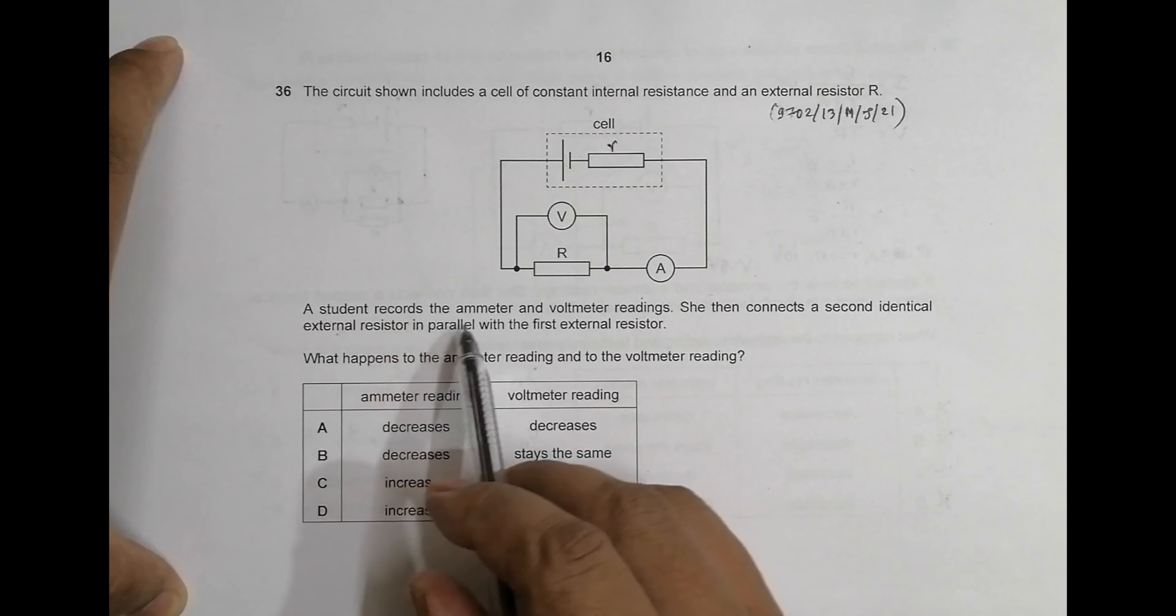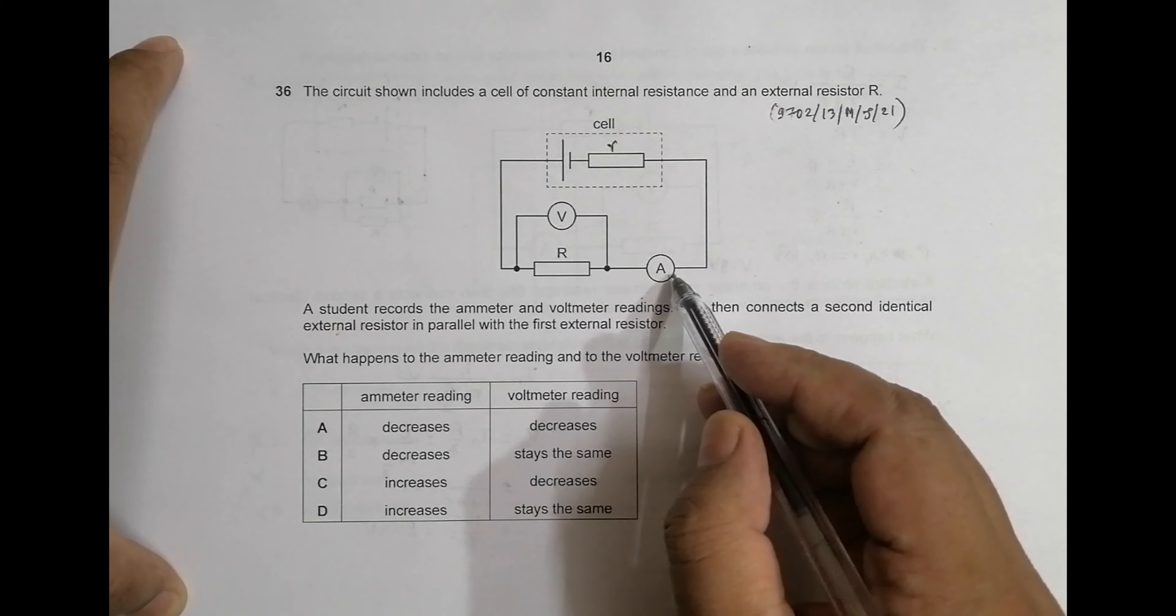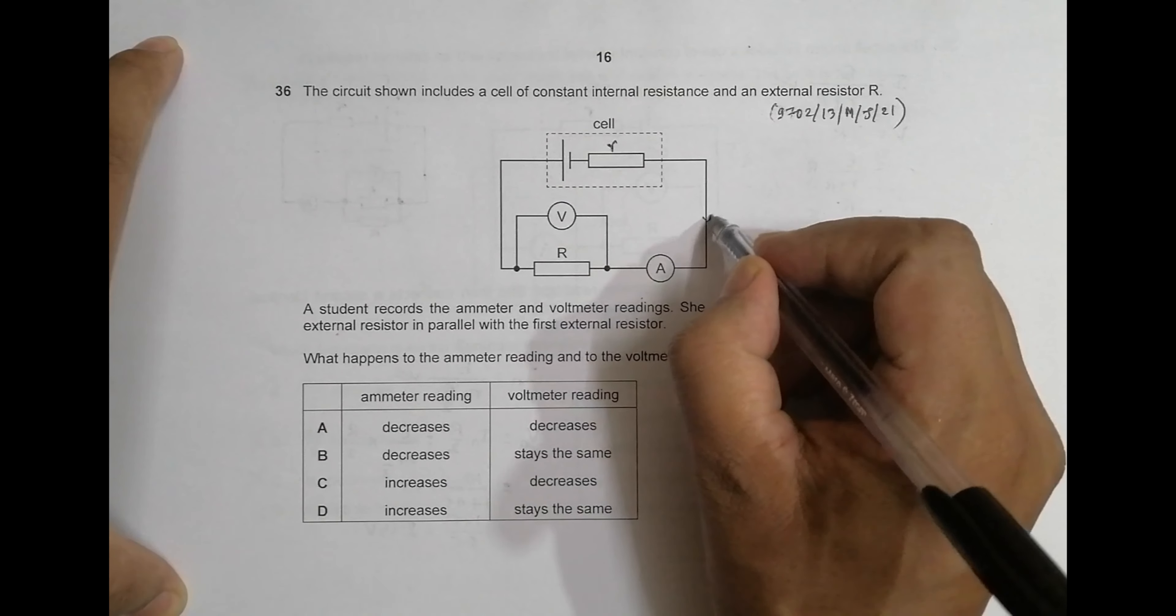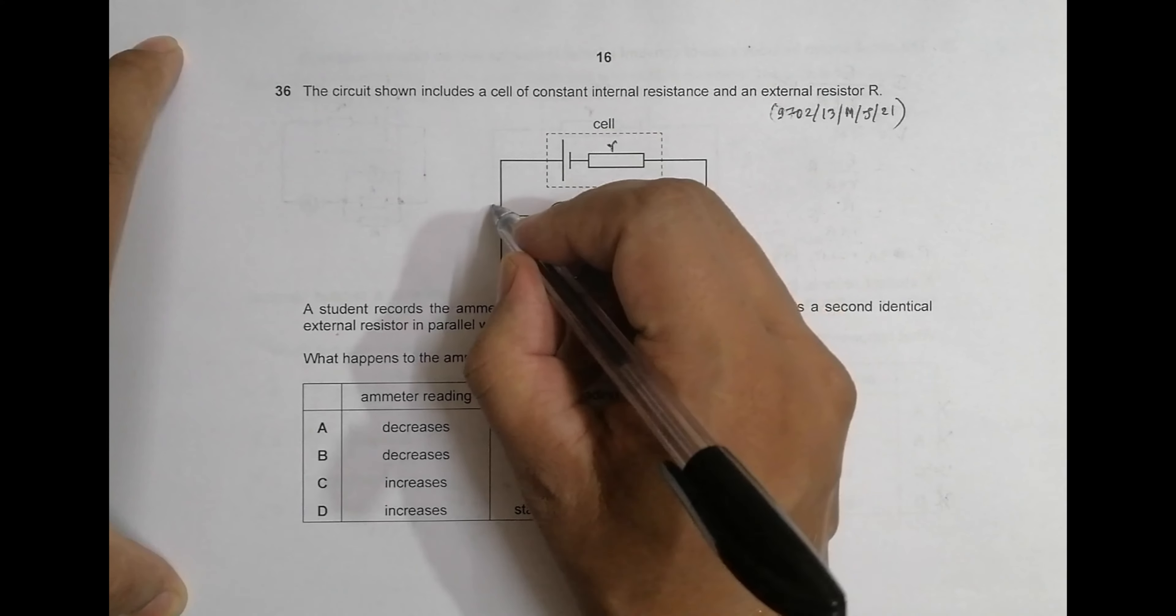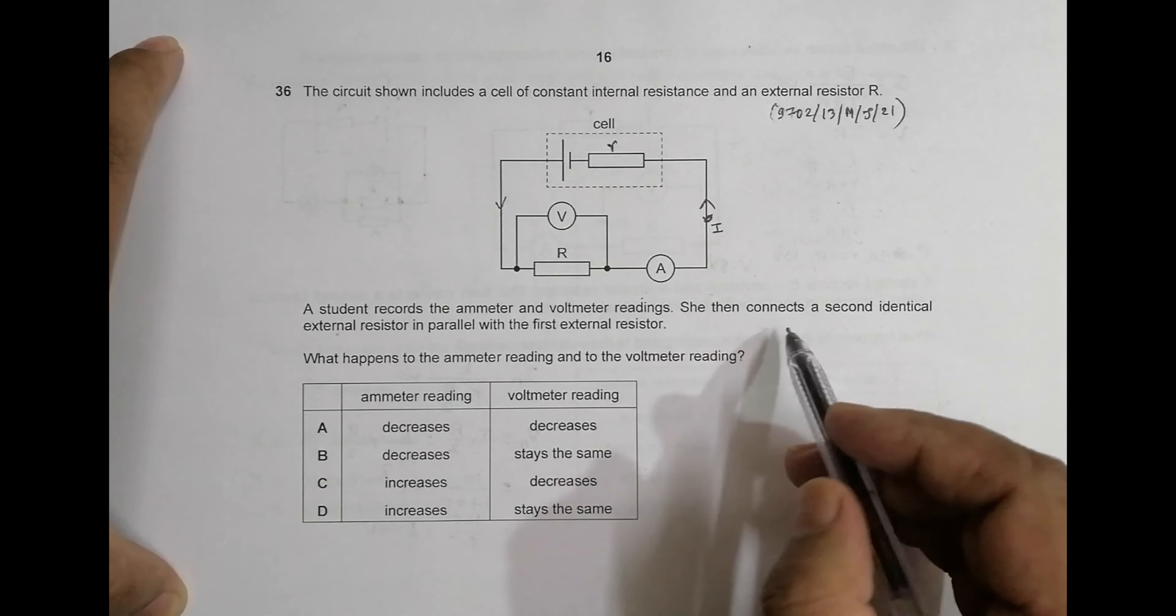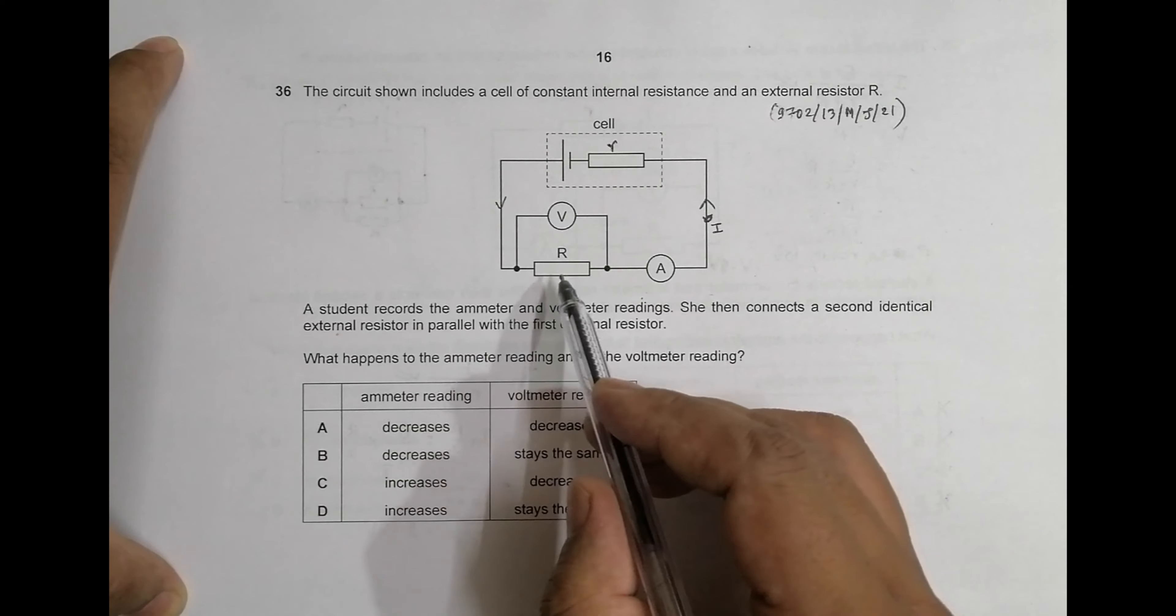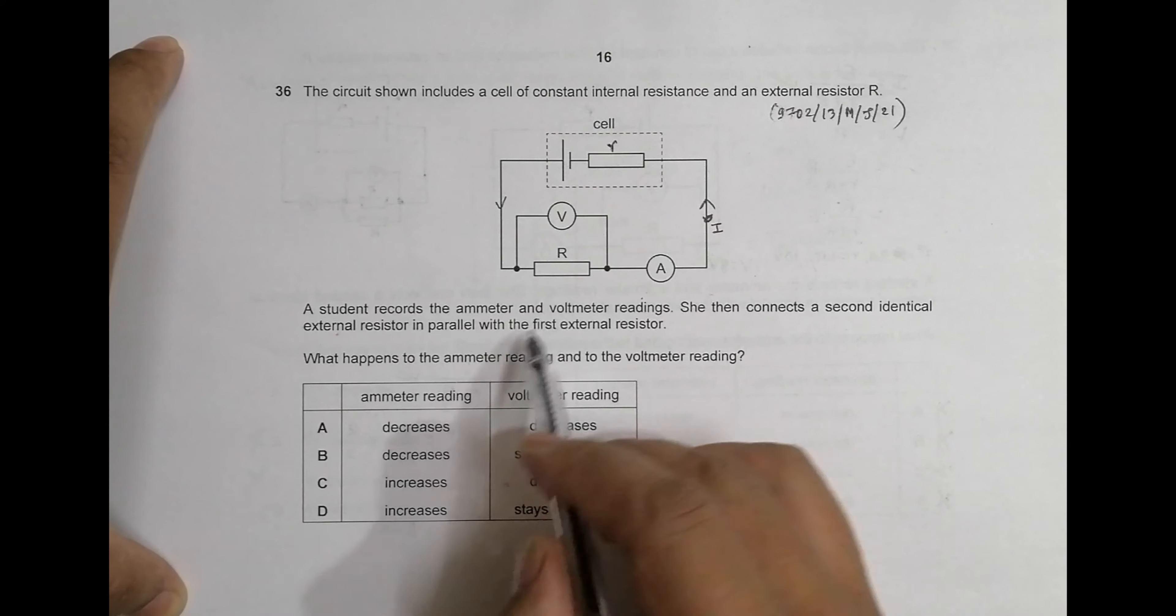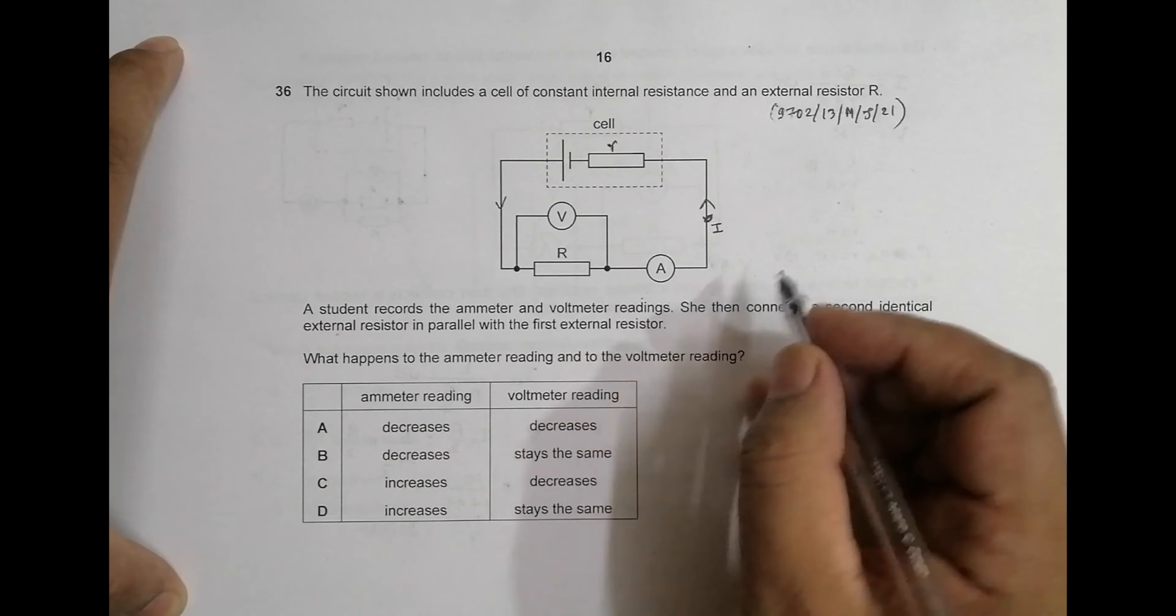A student records the ammeter and voltmeter readings. The voltmeter is here, the ammeter is here—ammeter means it is the current, so I can name it as I. She then connects a second identical resistor in parallel with the first one. So now she will connect one more resistor here in parallel. What happens to the ammeter reading and to the voltmeter reading?